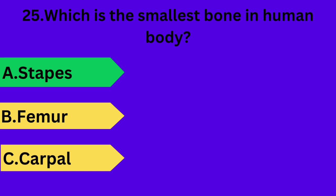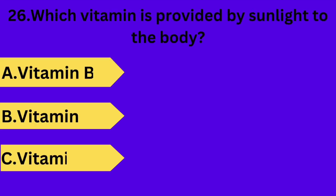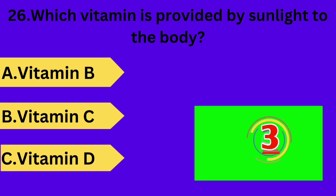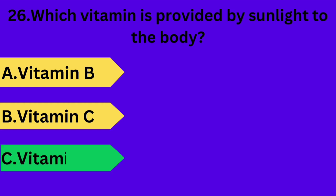And next question is: which vitamin is provided by sunlight to the body? Option A: vitamin B. Option B: vitamin C. Option C: vitamin D. Your time starts now. Answer is option C: vitamin D.